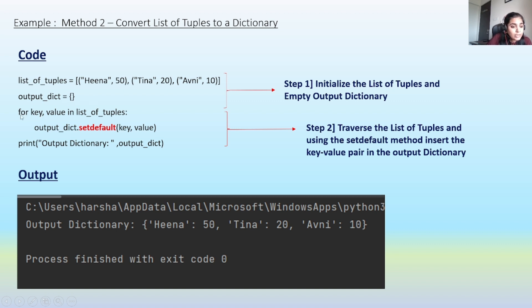For key, value in list of tuples, and then using the setdefault, which is a default method of dictionary, we are combining this key and value and storing it into our empty output dictionary. We are traversing each element, combining it, and then appending it in the output dictionary.